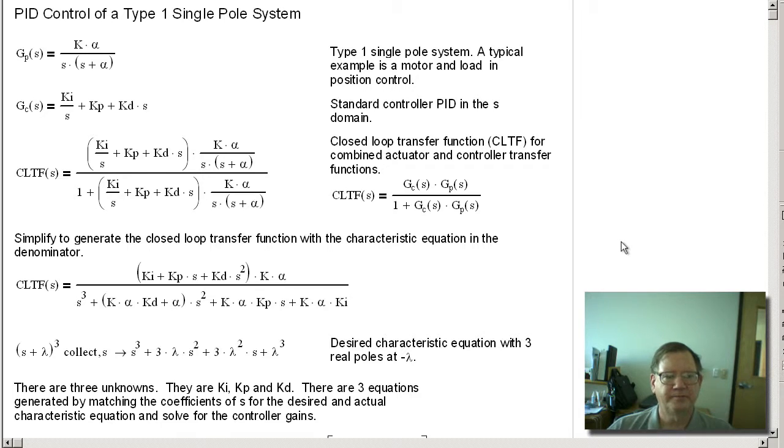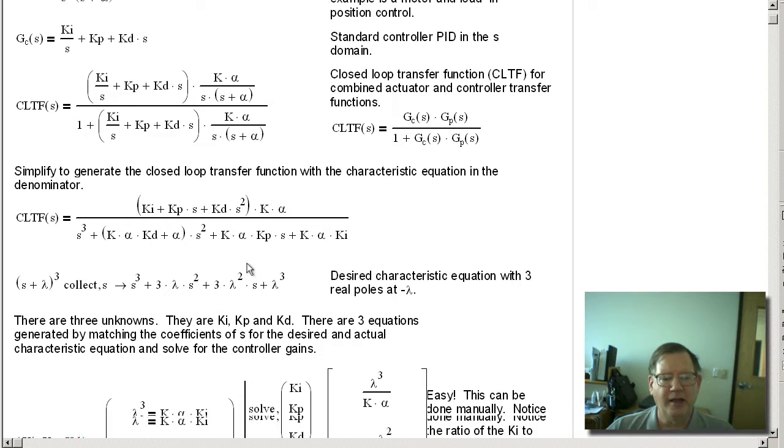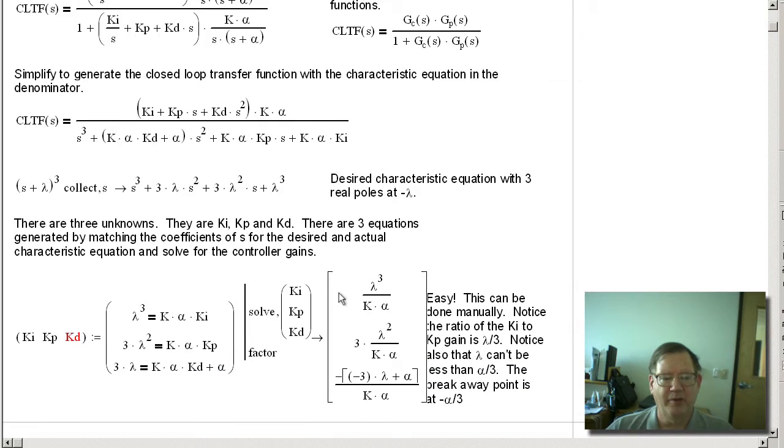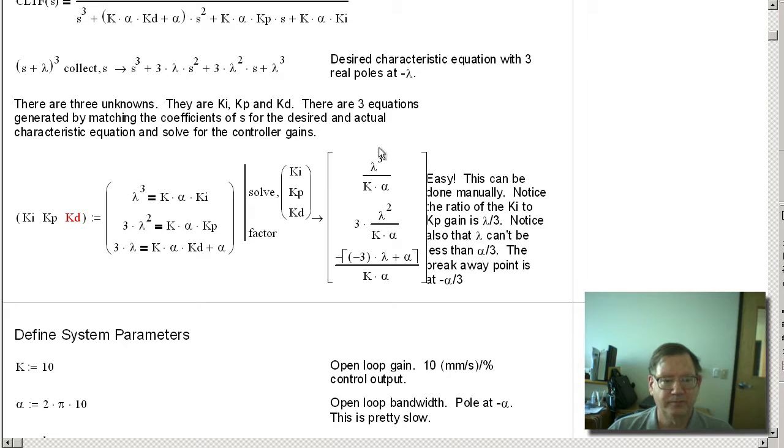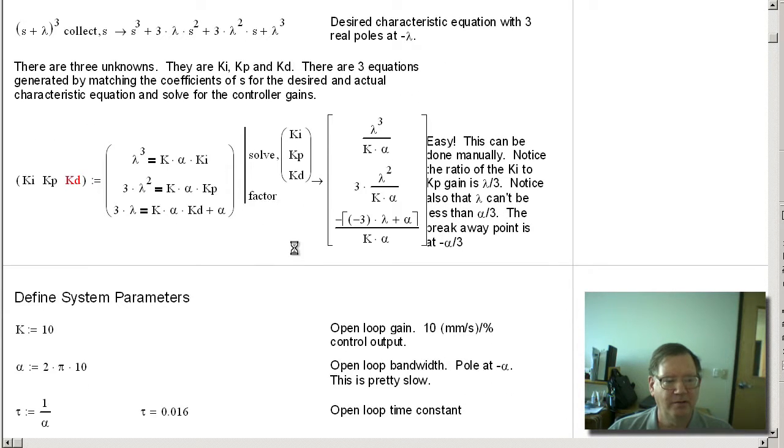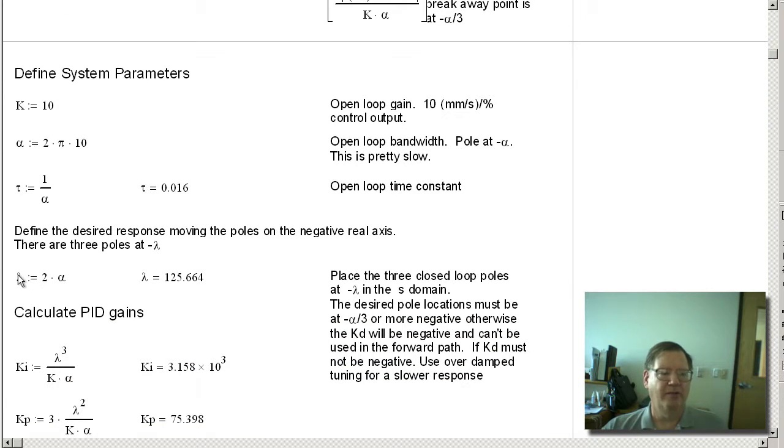So again, the key thing here is that we are calculating the symbolic formulas, and they're pretty simple to do even by hand. And one other thing we could look at is that this lambda allows us to move the closed-loop poles beyond the breakaway point, so we can get a much faster response.